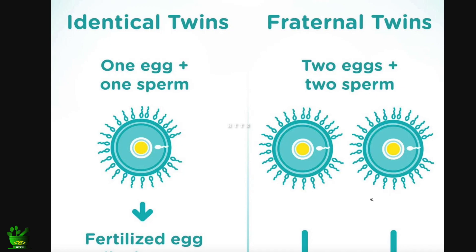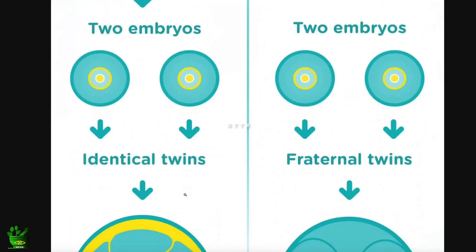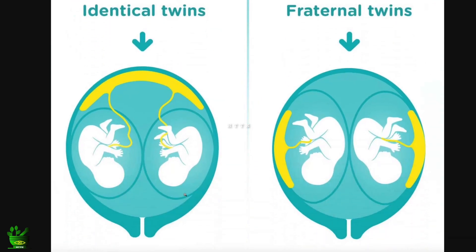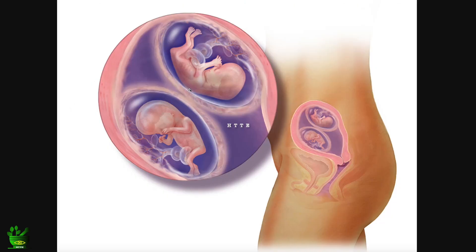Since the two eggs are fertilized by two different sperms, the chances are that both could be male, both could be female, or one could be male and one could be female — anything can happen. But in the case of identical twins, the sex of the two babies will always be the same — either both female or both male.